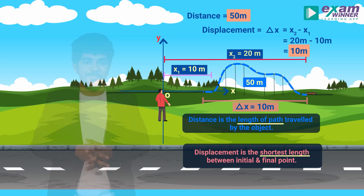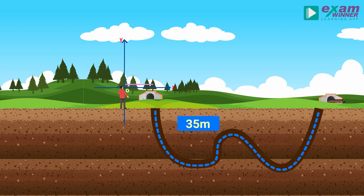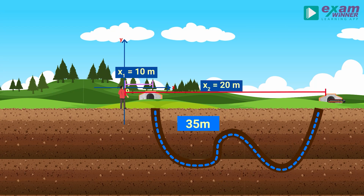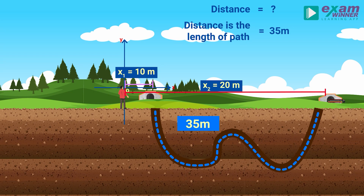This is the second scenario. If the train takes a different path, the distance is 35 meters. The initial position and the final position remain the same — x1 is 10 meters and x2 is 20 meters. The length of the path traveled this time is 35 meters, so the distance is 35 meters.